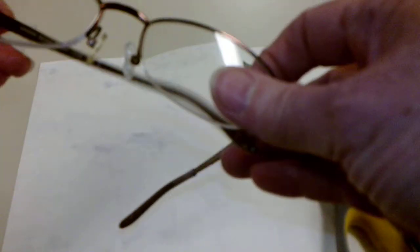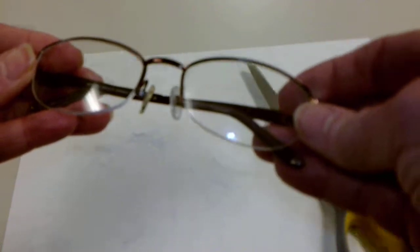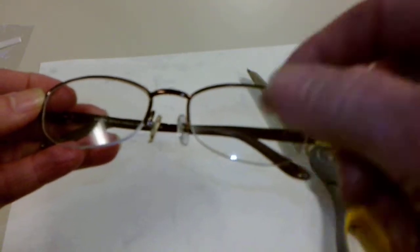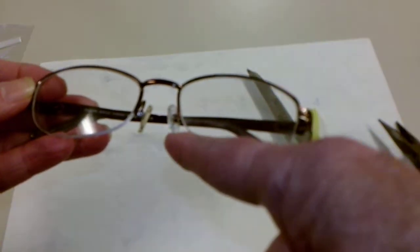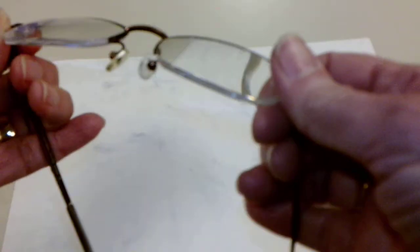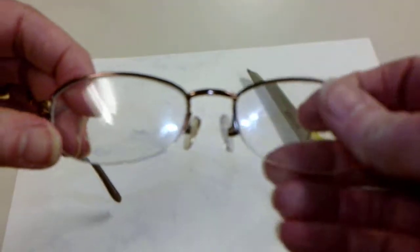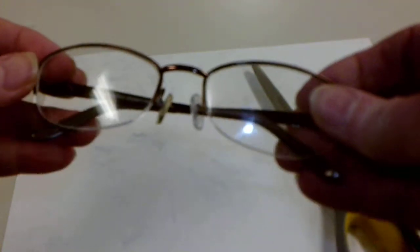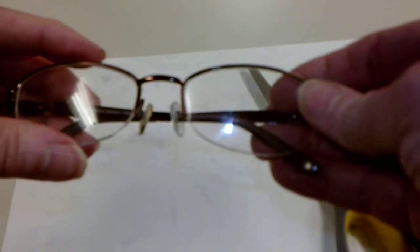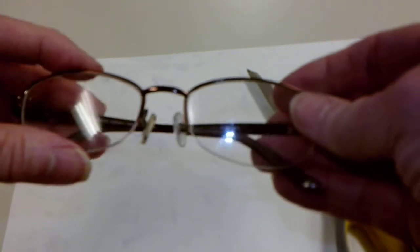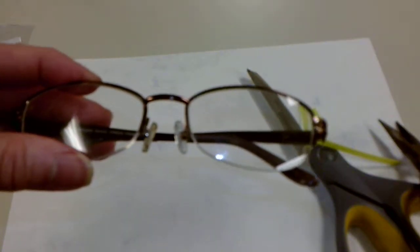If you need to raise their optical centers after you've added that panto, then you bring in the nose pads or add a little bit of curvature to the front, which will also raise things up. And let me show you another way to add angle or pantoscopic tilt.